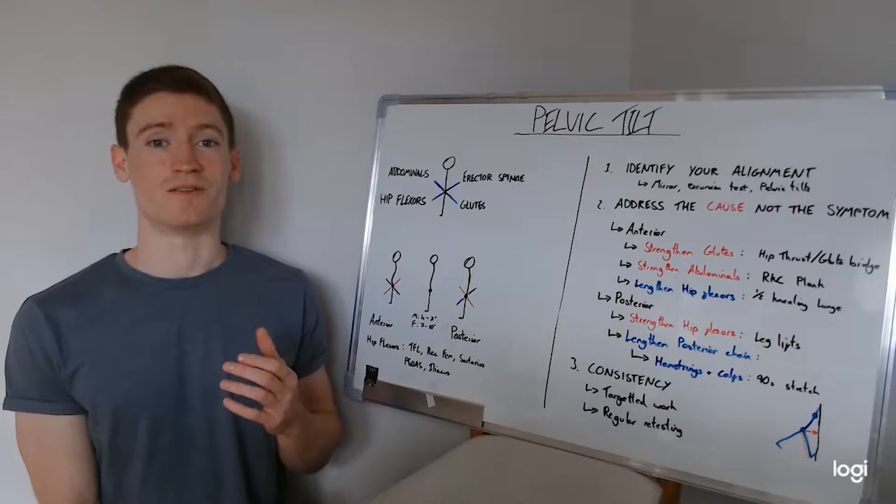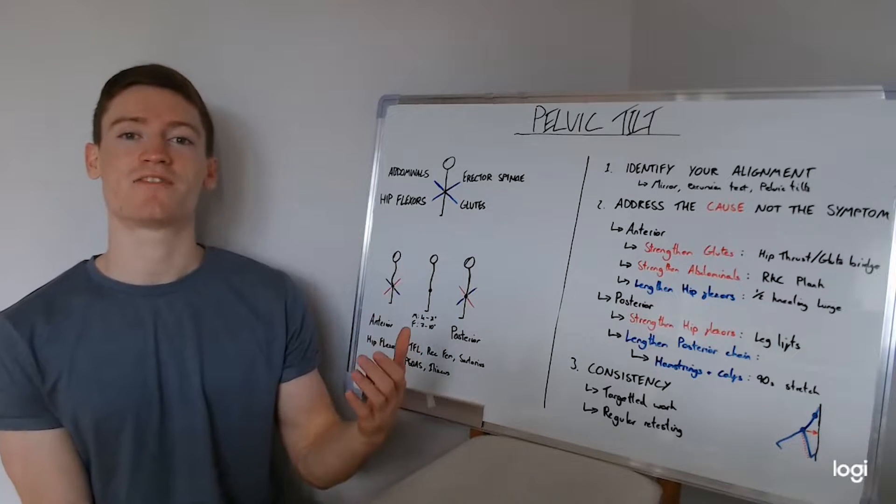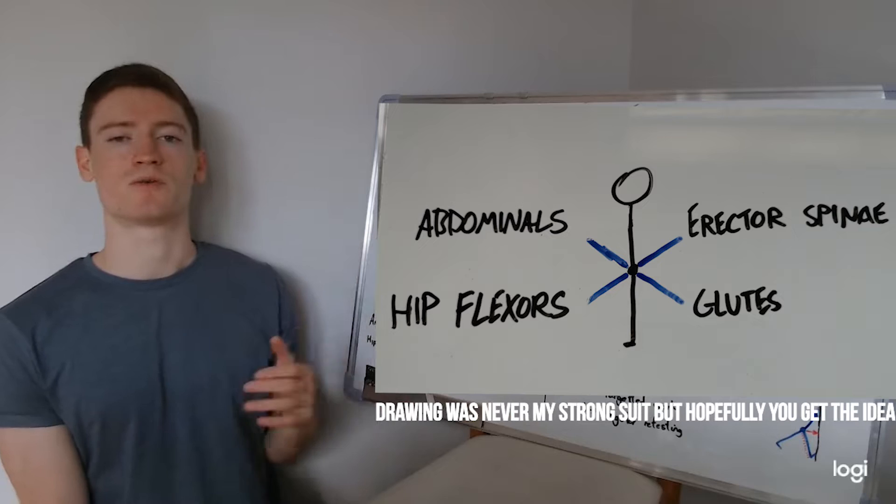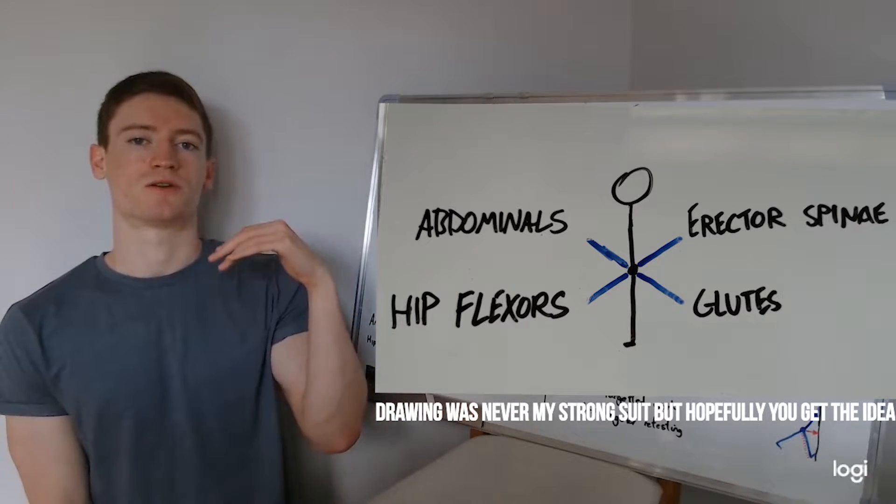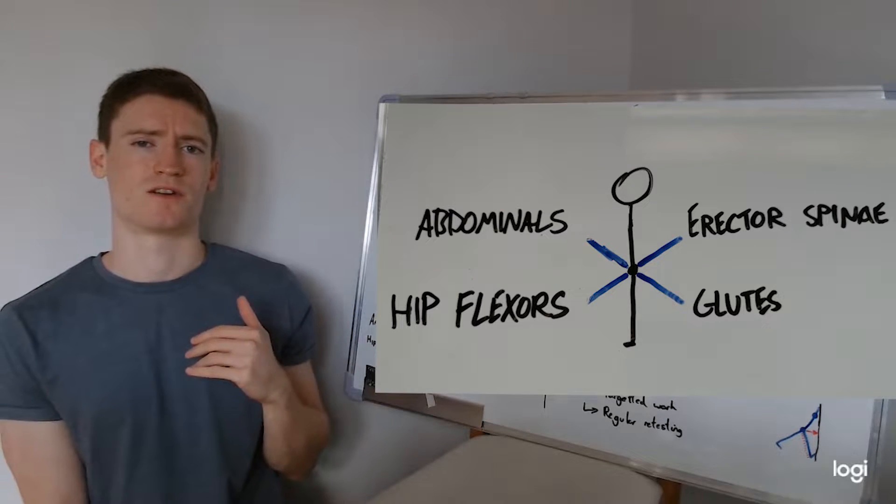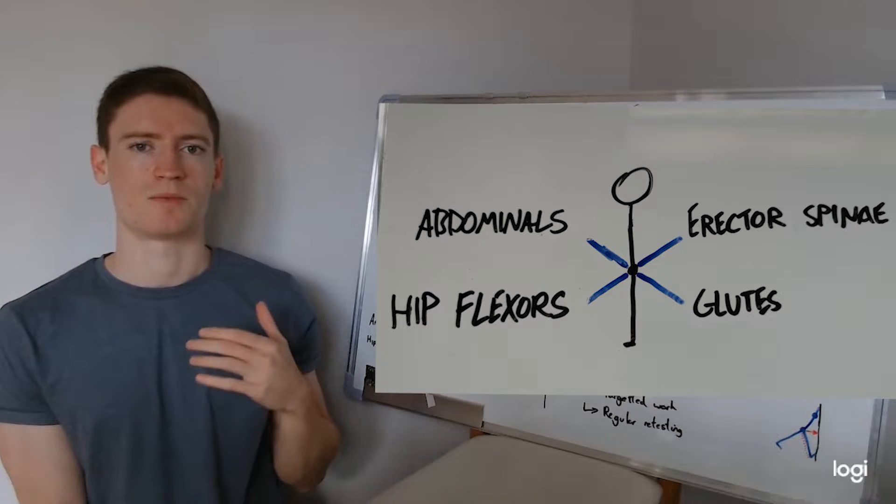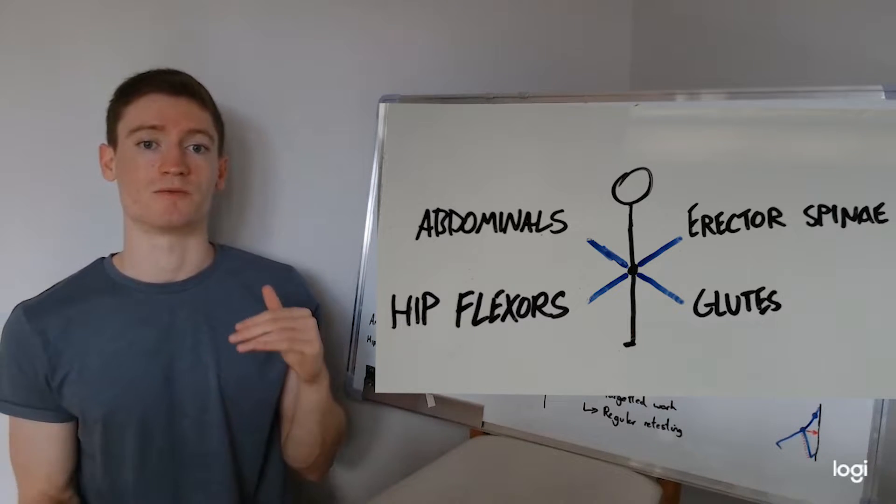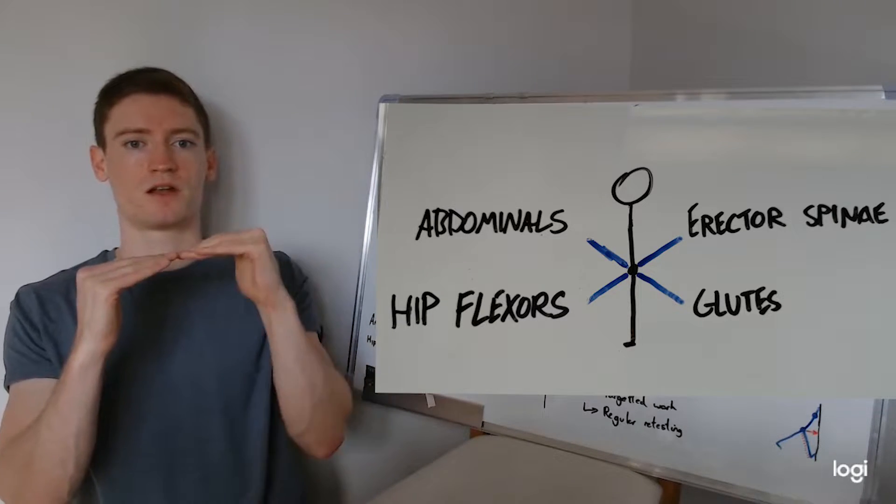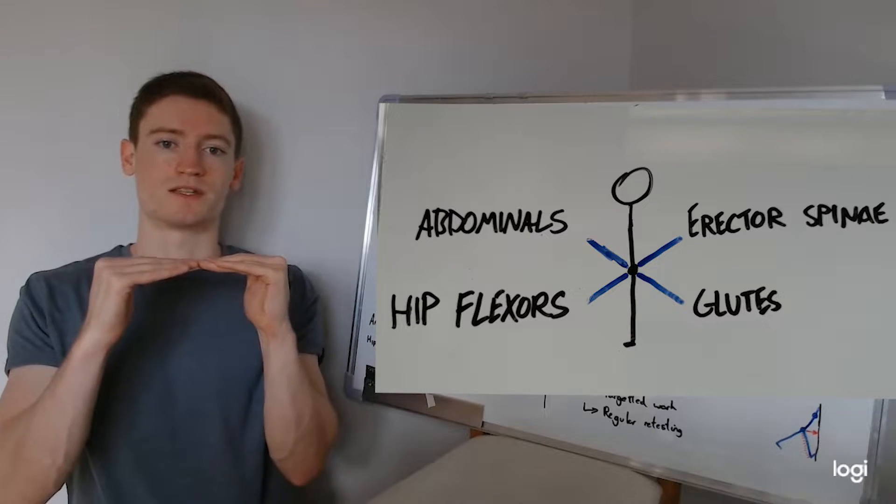So diving into a little bit of anatomy, on the front side, the anterior, we have the hip flexors and the abdominals. The hip flexors are situated generally below the pelvis at the front and the abdominals situated generally above the pelvis at the front. That's how we're going to think about them in terms of where they originate from and the actions they have on the pelvis. So the abdominals would pull the pelvis up at the front and the hip flexors would pull the pelvis down at the front.